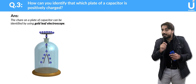If the gold leaf electroscope's leaves show increased divergence, then the plate has a positive charge. If the divergence between the two leaves decreases, then the capacitor plate has a negative charge. This is the answer to the question, and the explanation with a diagram has been provided.